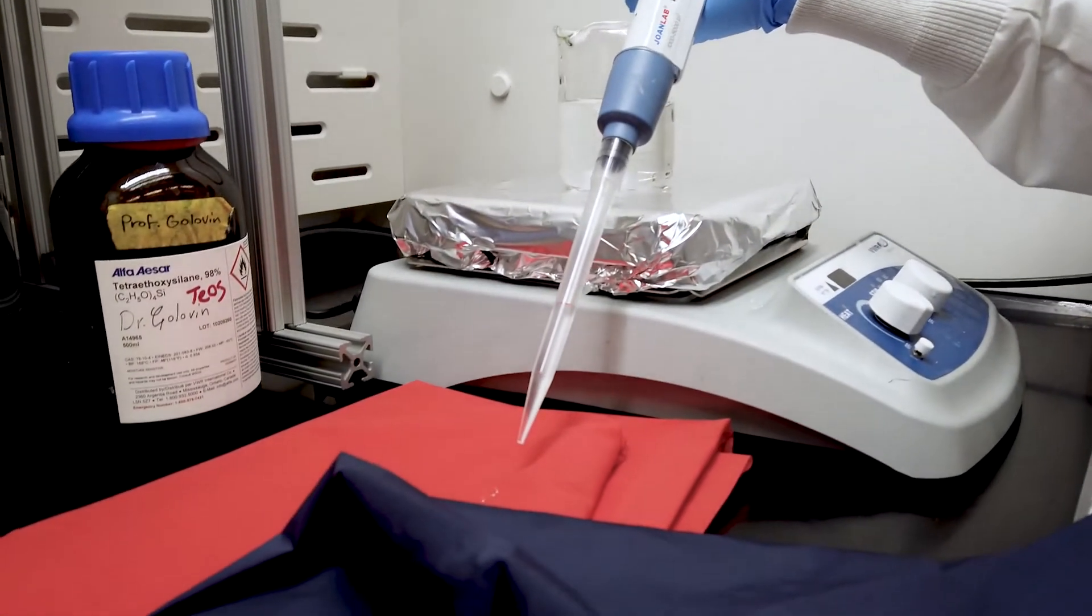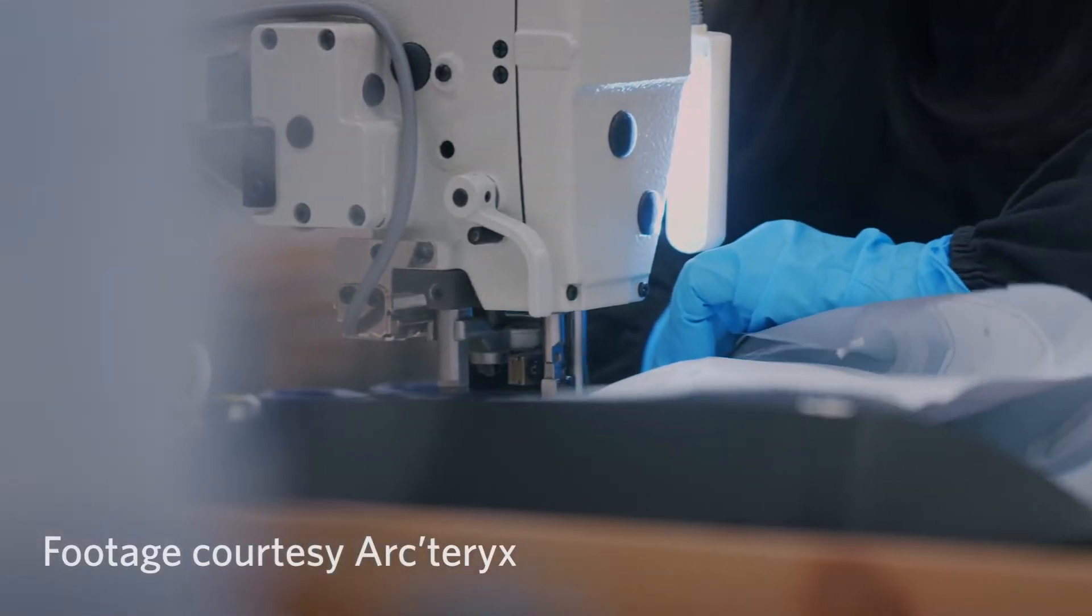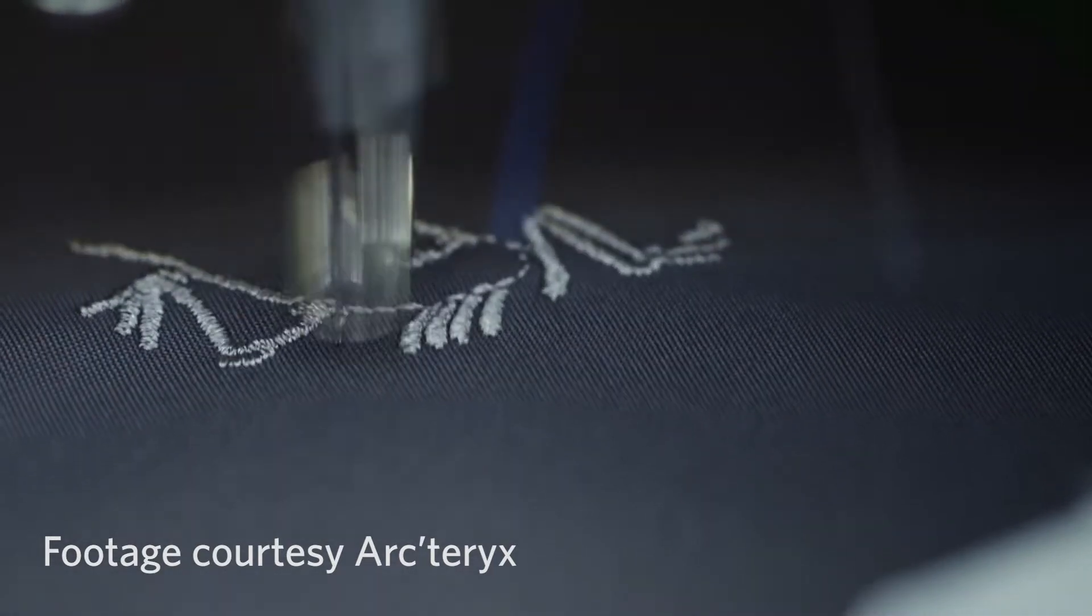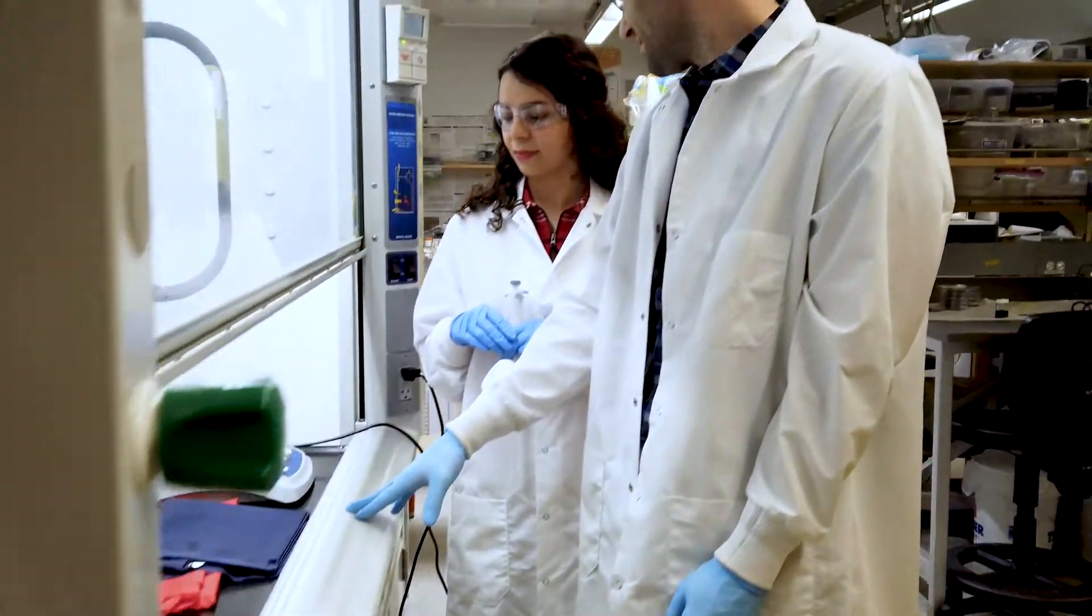Outdoor apparel companies like Arc'teryx have been making waterproof jackets for a very long time, but they've always had to use perfluorochemicals which are known to be toxic. But there was no replacement or alternative if you wanted to achieve the sort of sweat repellency and oil repellency of their outdoor apparel.